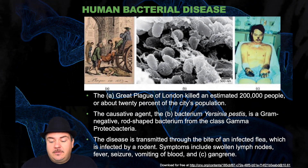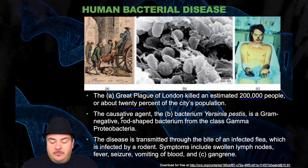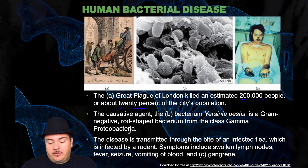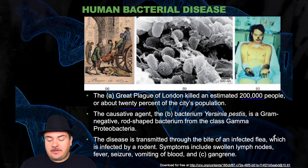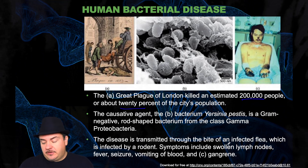The Great Plague of London killed an estimated 200,000 people, which at the time was about 20% of the city's population. The causative agent was a gram-negative, rod-shaped bacterium of the class Gamma Proteobacteria. The disease is transmitted through the bite of an infected flea, which is infected by a rodent. Symptoms include swollen lymph nodes, fever, seizure, vomiting blood, and gangrene.